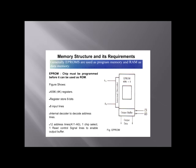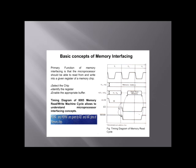Basic concepts of memory interfacing: The primary function of memory interfacing is that the microprocessor should be able to read from and write into a given register of a memory chip. To perform these operations, the microprocessor should be able to select the chip, identify the register, and enable the appropriate buffer.